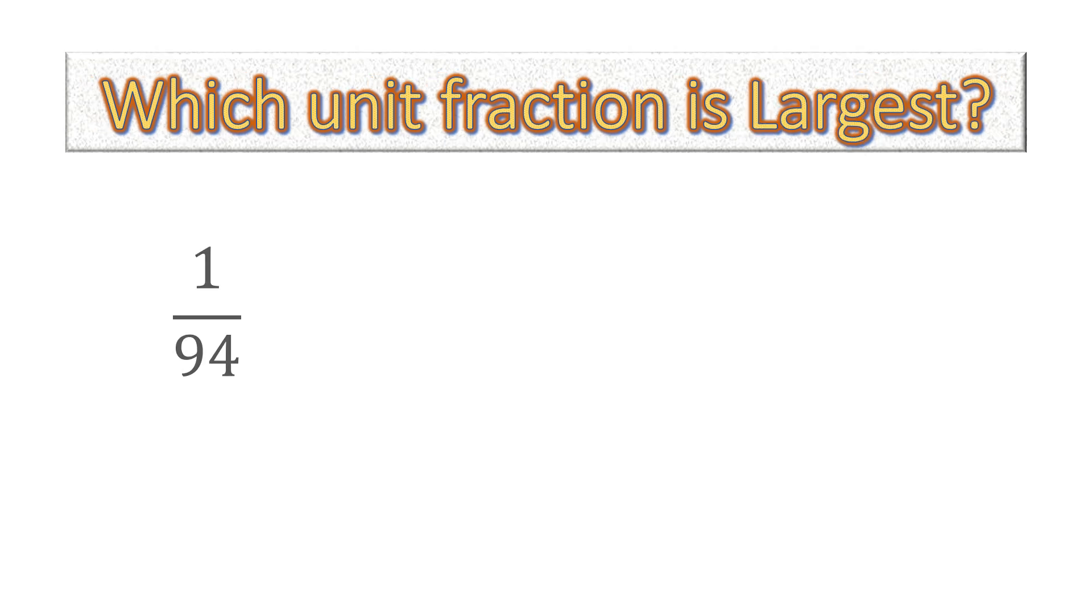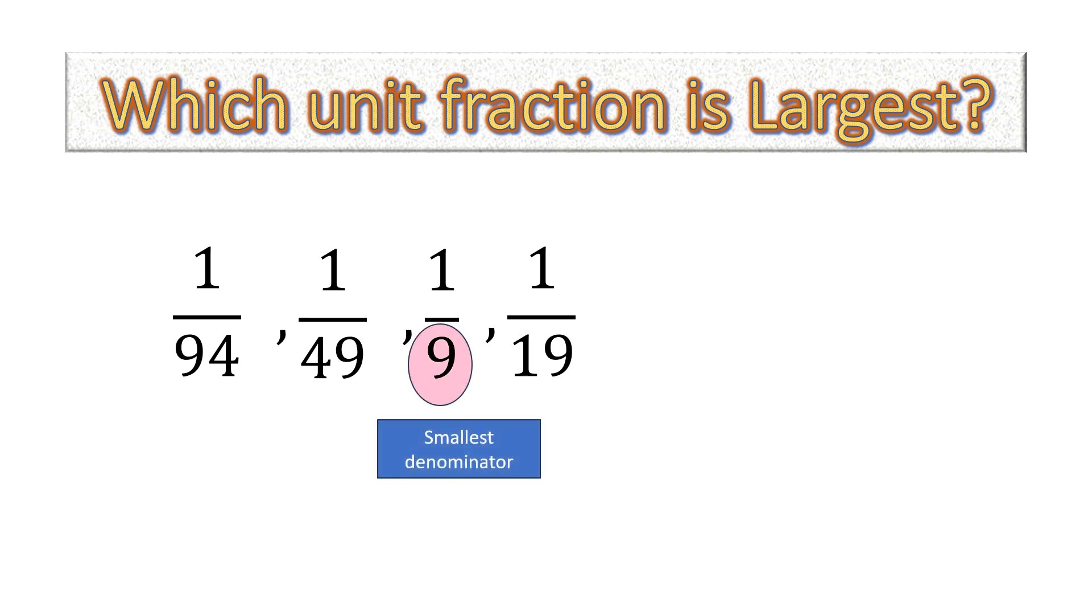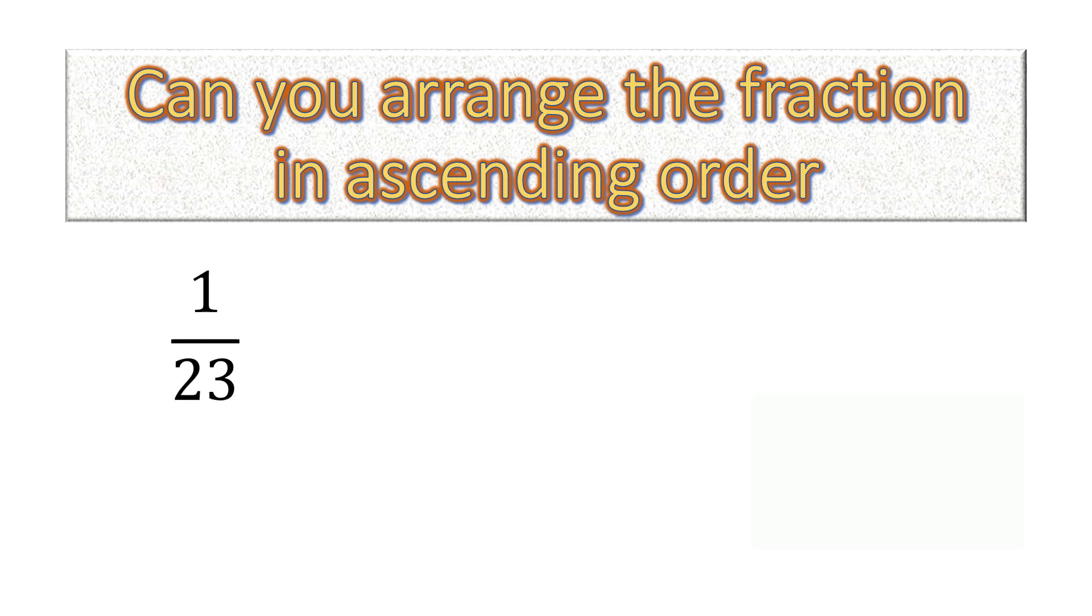Which unit fraction is the largest? 1 over 94, 1 over 49, 1 over 9, or 1 over 19. Find out which is the smallest denominator. 9 is the smallest denominator, so which one will be the largest fraction? 1 over 9 will be the largest fraction. Now can you arrange the given fractions in ascending order?